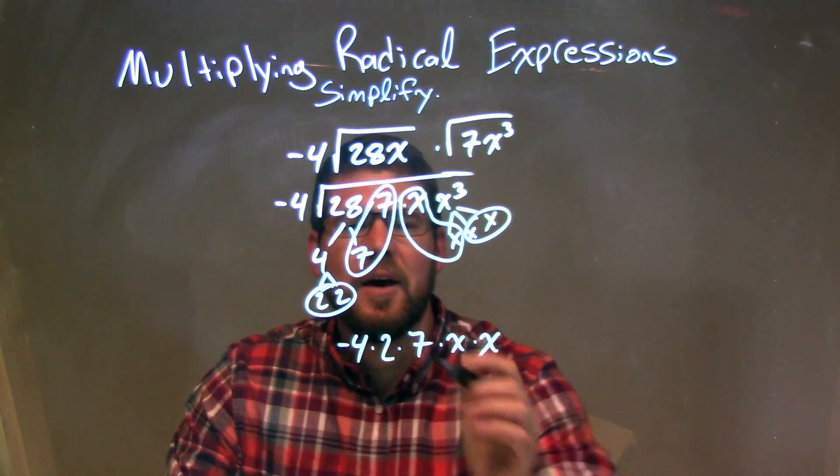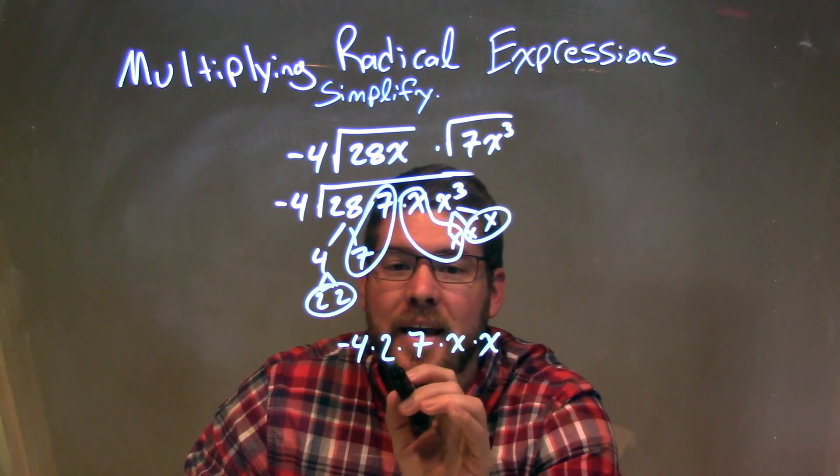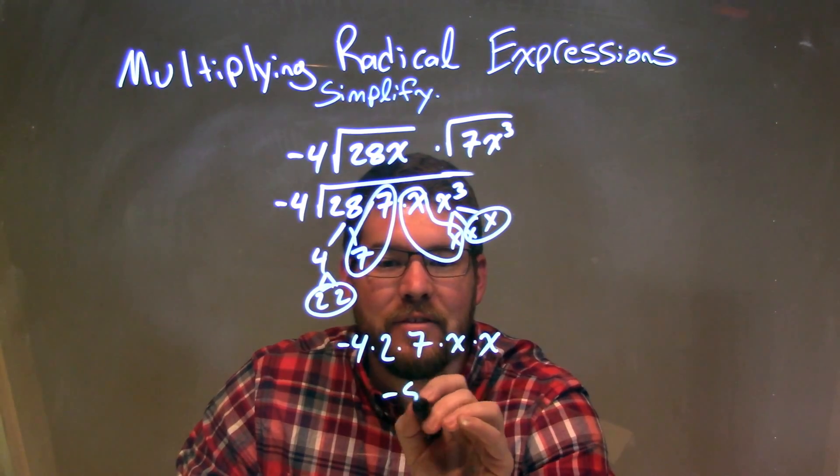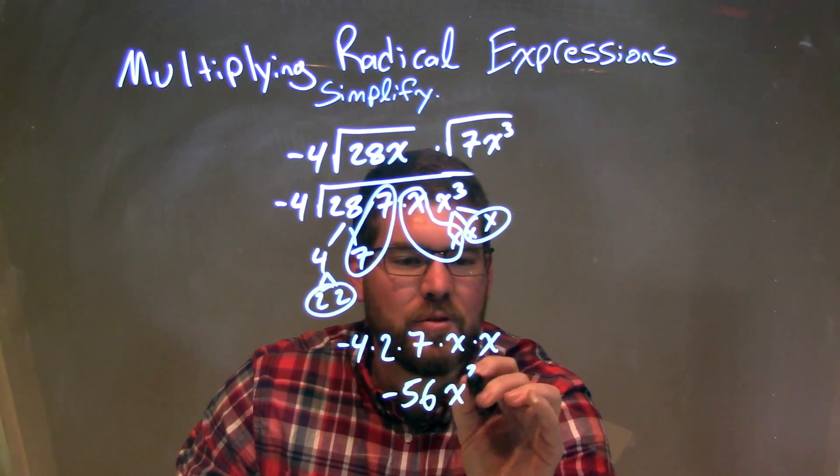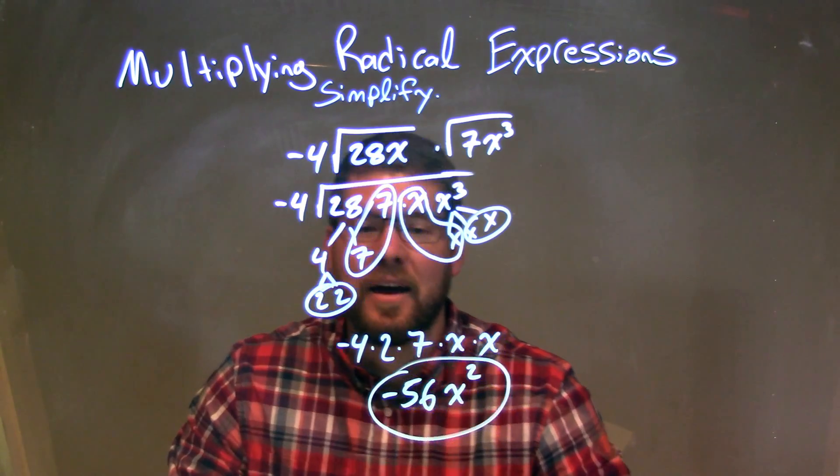So now we have to simplify this. Negative 4 times 2 is negative 8. And negative 8 times 7 is negative 56. x times x is x squared. So that's it. That's our final answer. Negative 56 times x squared.